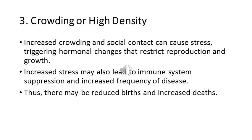Along with increased death rate, increased crowding and social contact cause stress, triggering hormonal changes that restrict population growth and reduce the birth rate. This stress factor also affects the immune system — increased stress leads to suppression of the immune system and increased frequency of diseases, which ultimately causes higher death rate. In this way, crowding acts as a regulatory mechanism: when there is high density, there are more deaths and fewer births, regulating the increasing population.